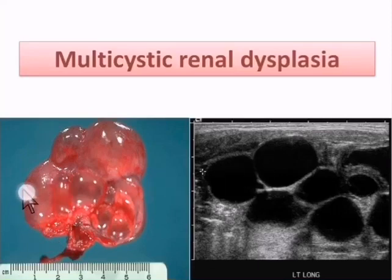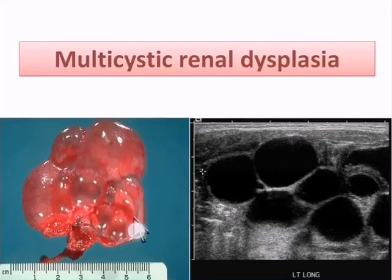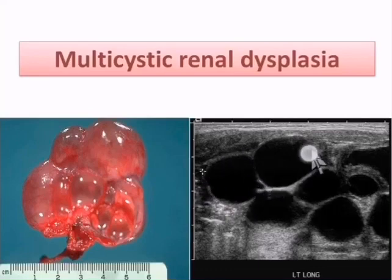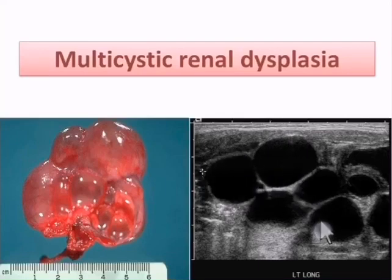Grossly, multicystic renal dysplasia shows large cysts of variable size. On ultrasound, a characteristic finding is non-communicating cysts — the cysts are not connected to each other. It usually ends in renal failure if bilateral; if it involves one kidney, it may be surgically corrected or transplanted.